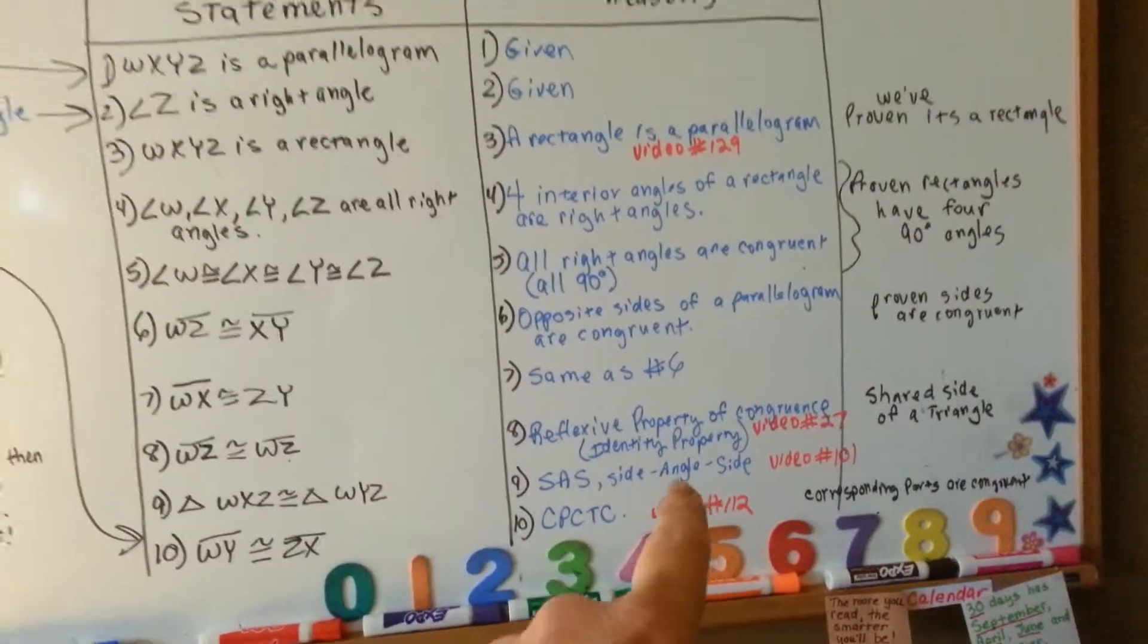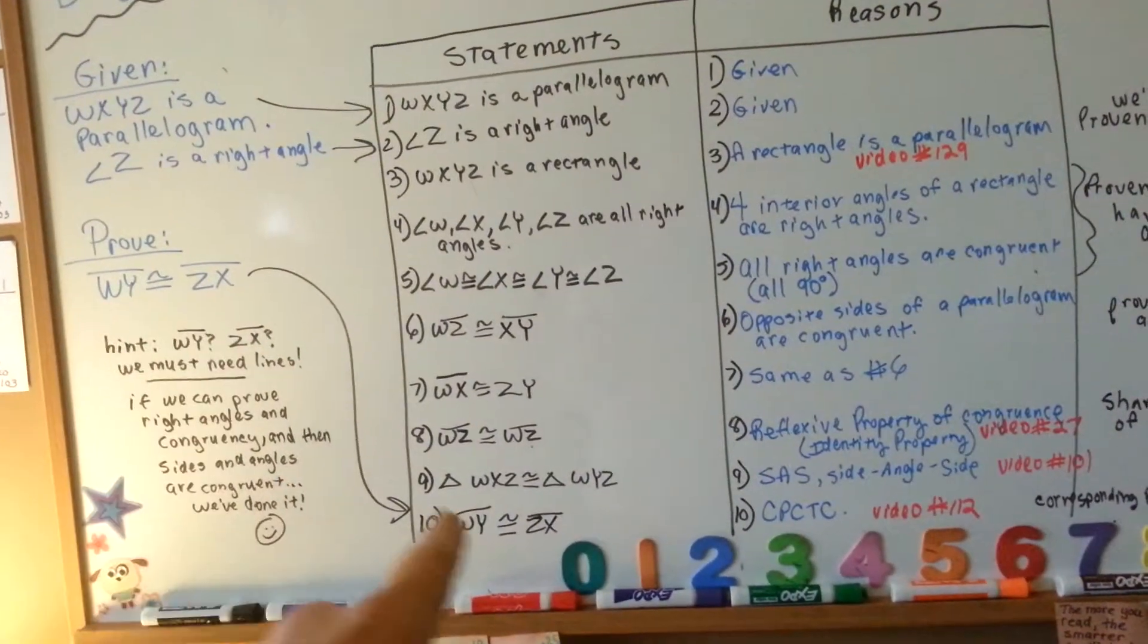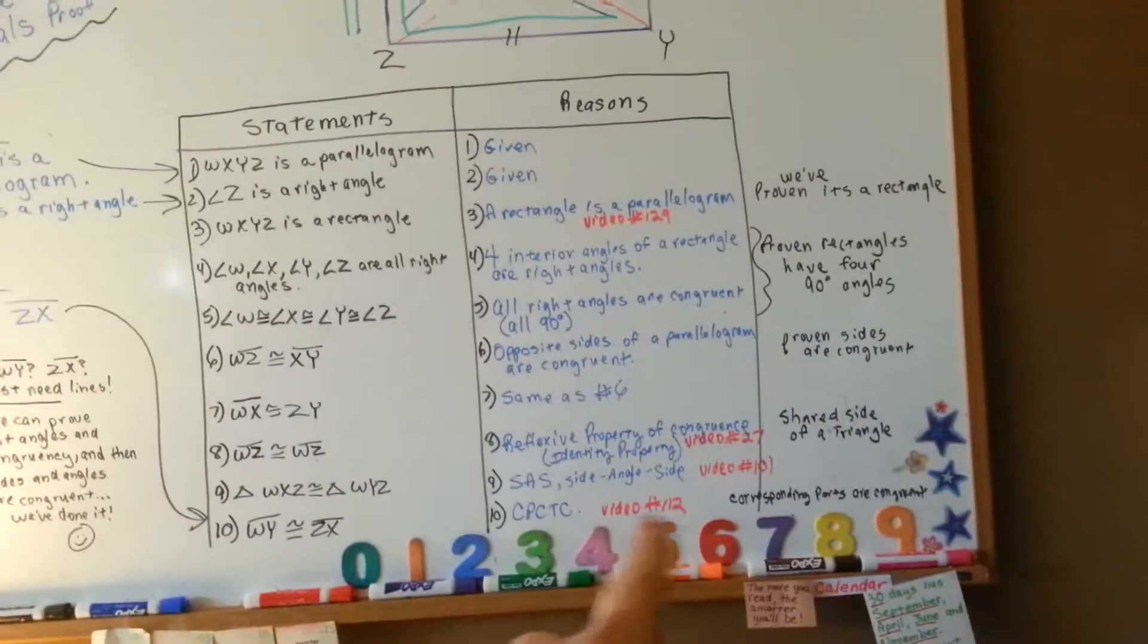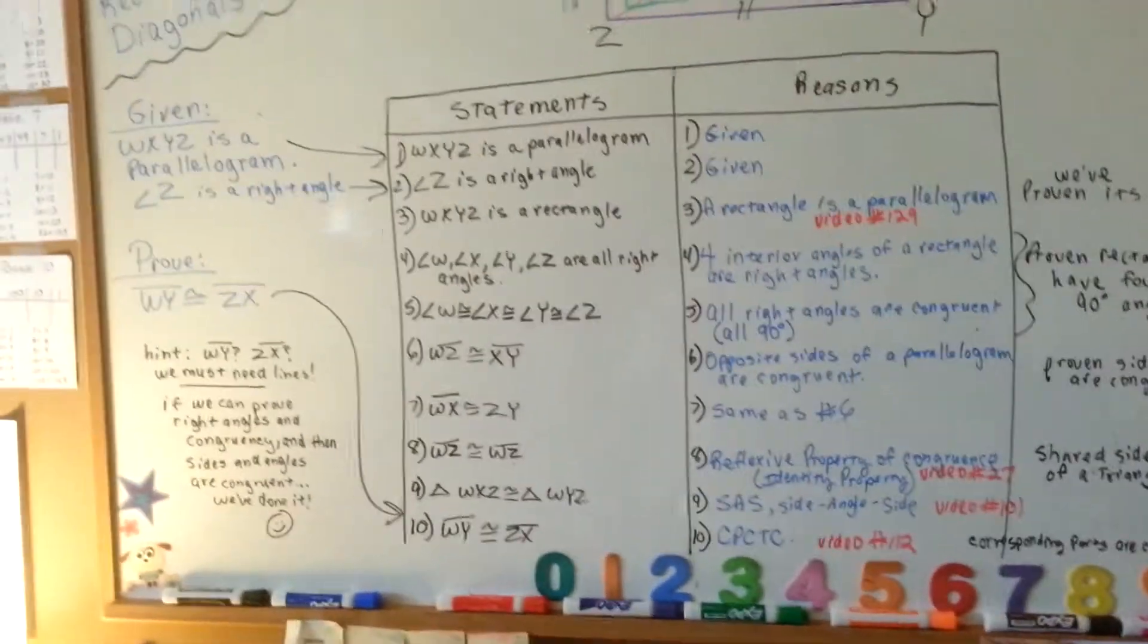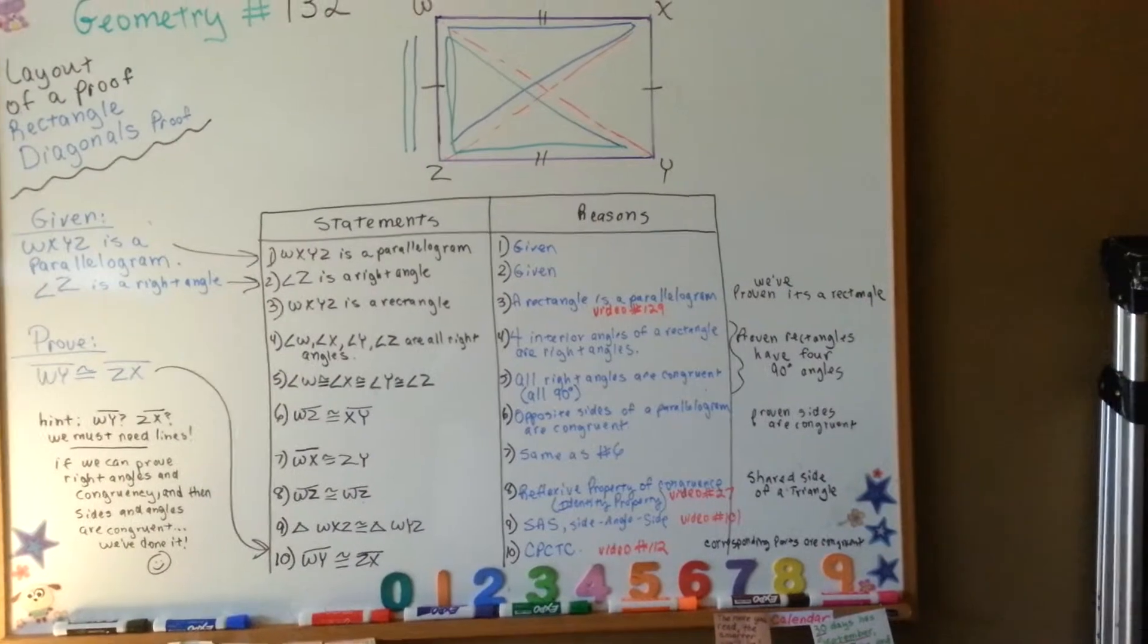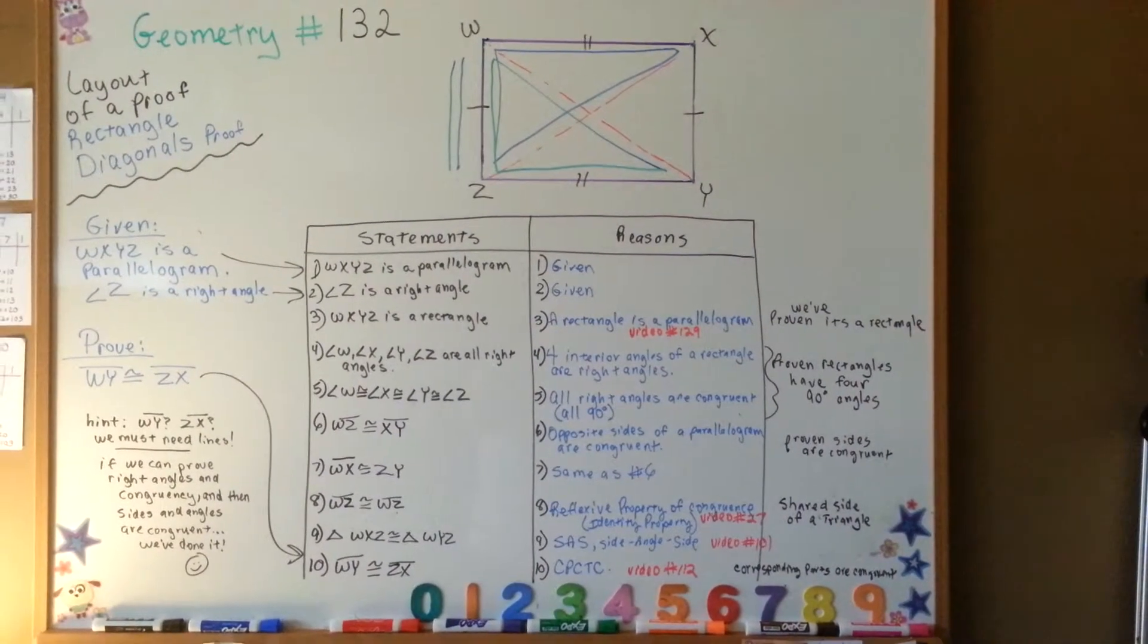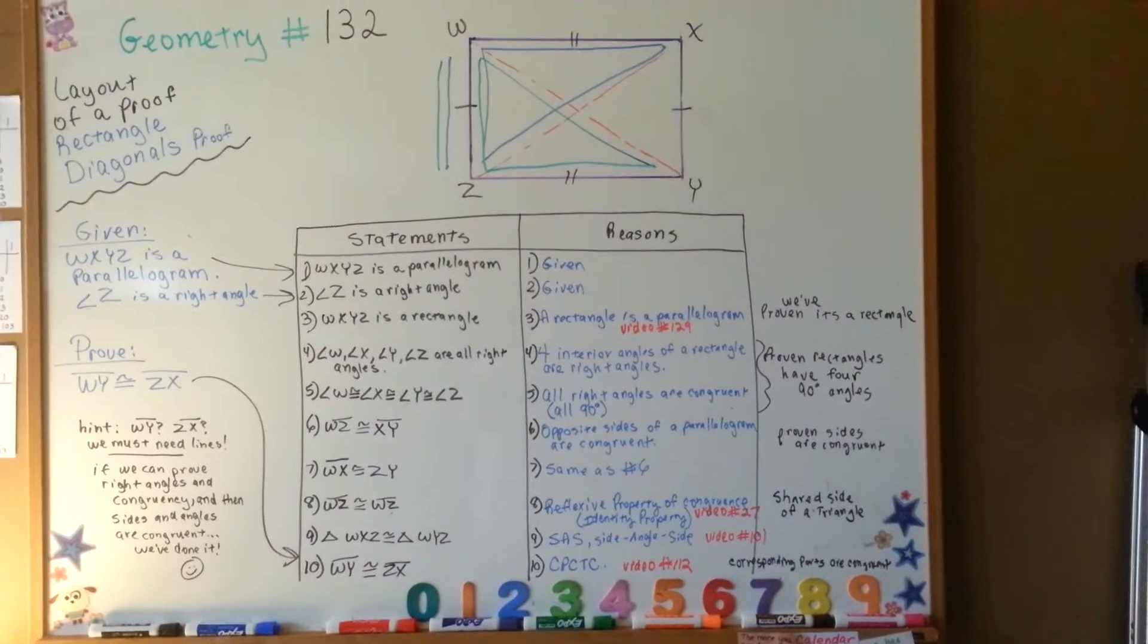we can now say that WY is congruent to ZX because of the corresponding parts of congruent triangles are congruent. And CPCTC, that's in video 112. So, that is how to do a proof for rectangle diagonals to show that one of the angles is a right angle, and to prove that one side is congruent to the other side.